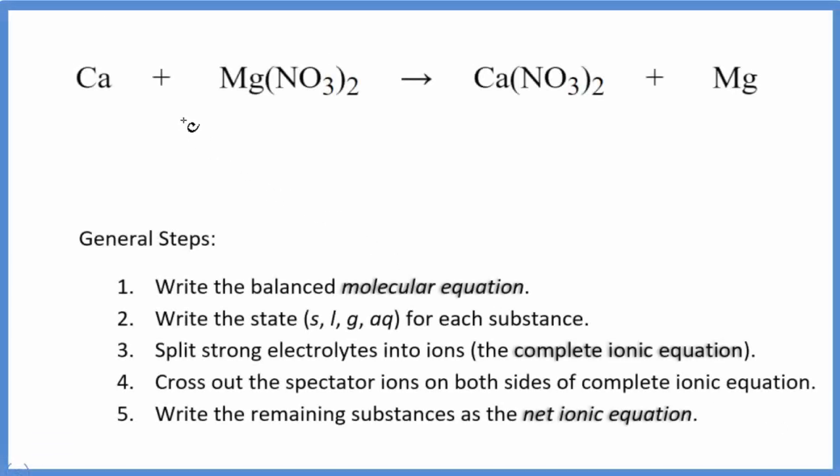In this video, we'll write the balanced net ionic equation for Ca plus Mg(NO3)2. This is calcium and this is magnesium nitrate.